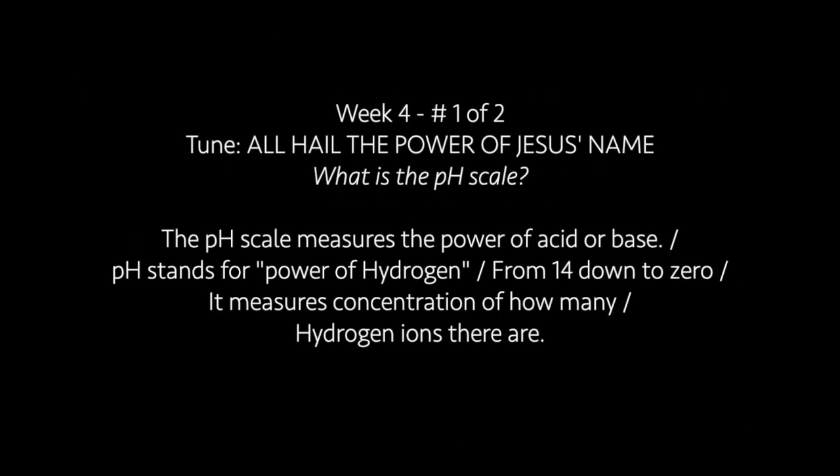The pH scale measures the power of acid or base. pH stands for power of hydrogen, from 14 down to 0. It measures the concentration of how many hydrogen ions there are.